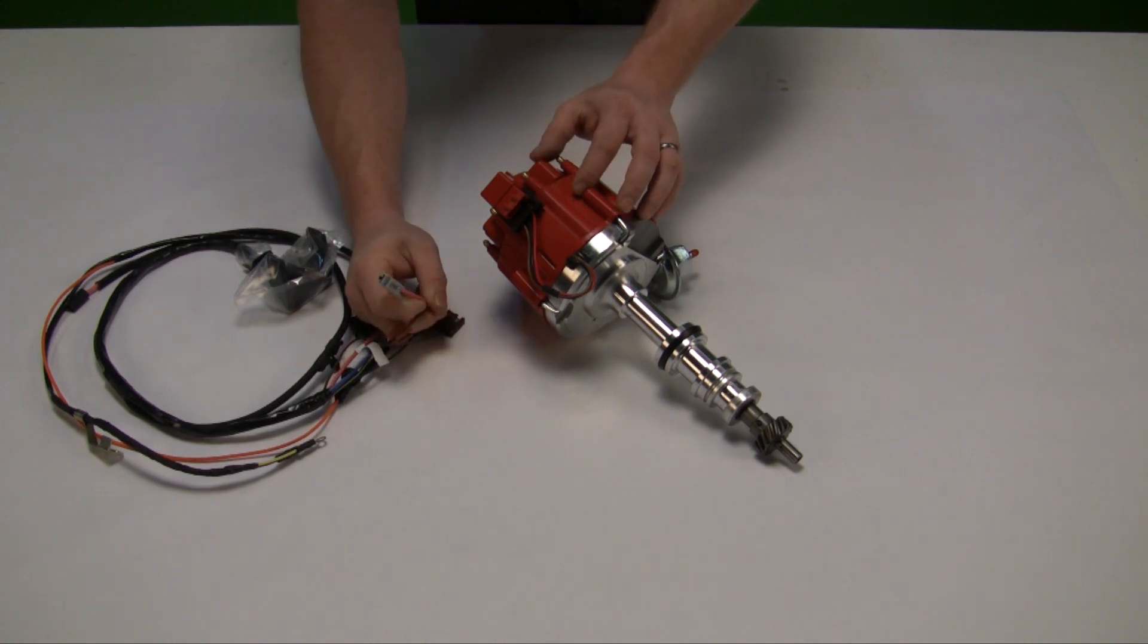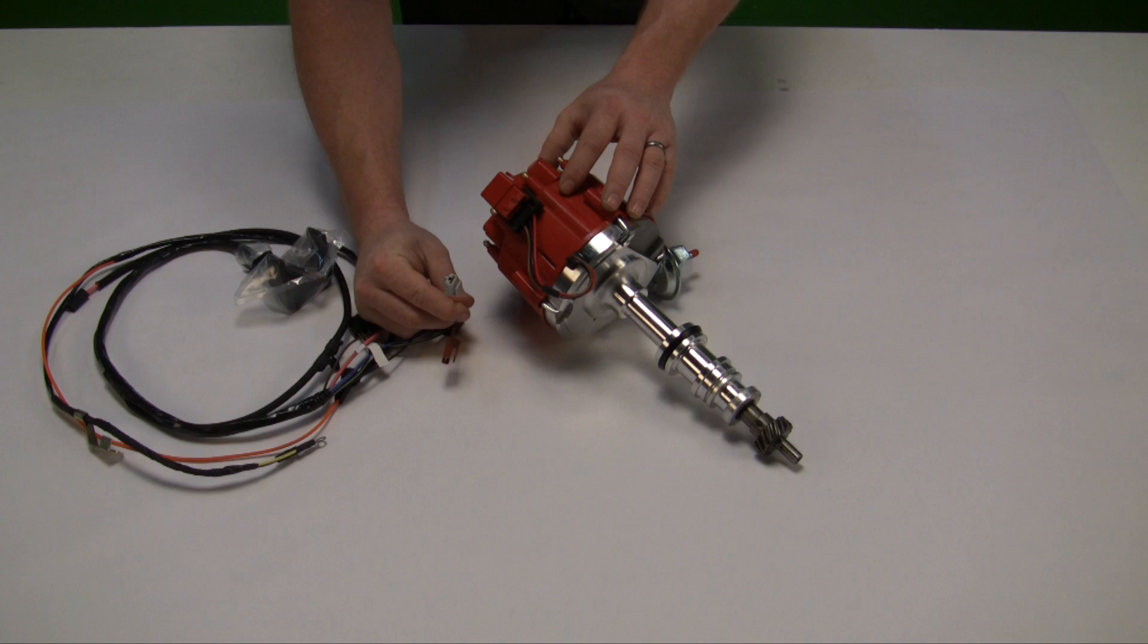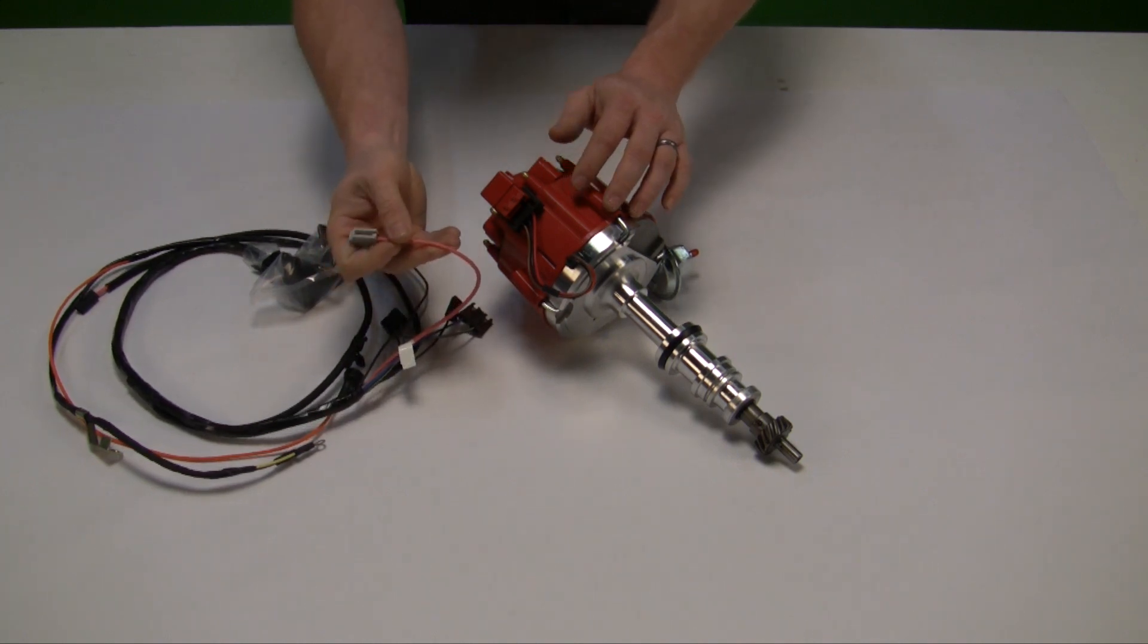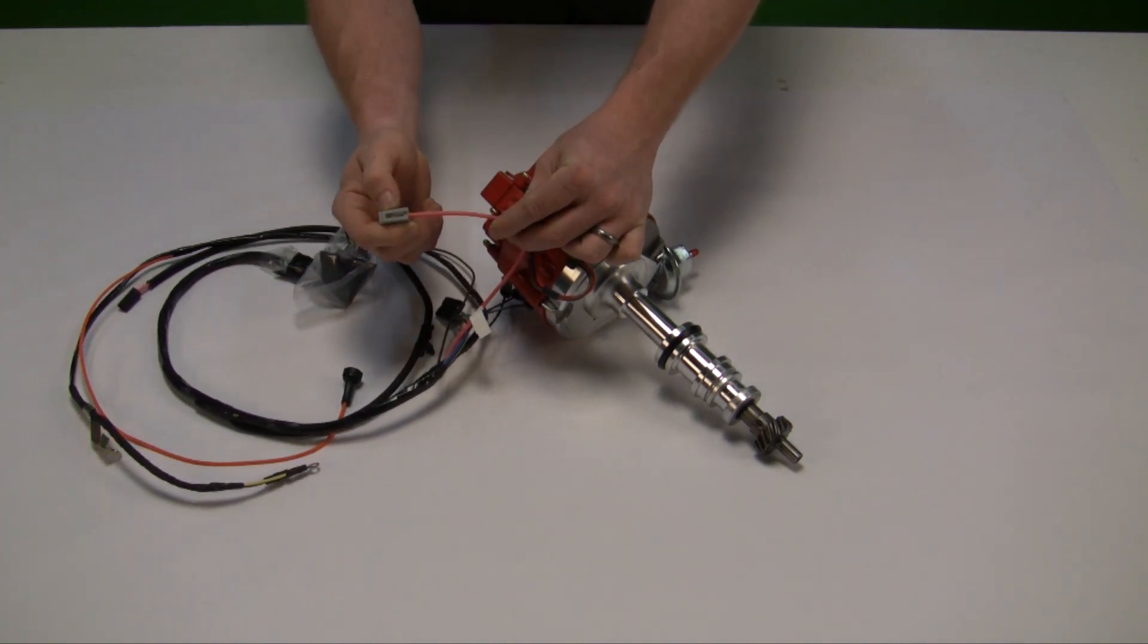At the top of the cap it's labeled BAT and TACH. The BAT connection is your ignition wire. This is usually a pink wire.